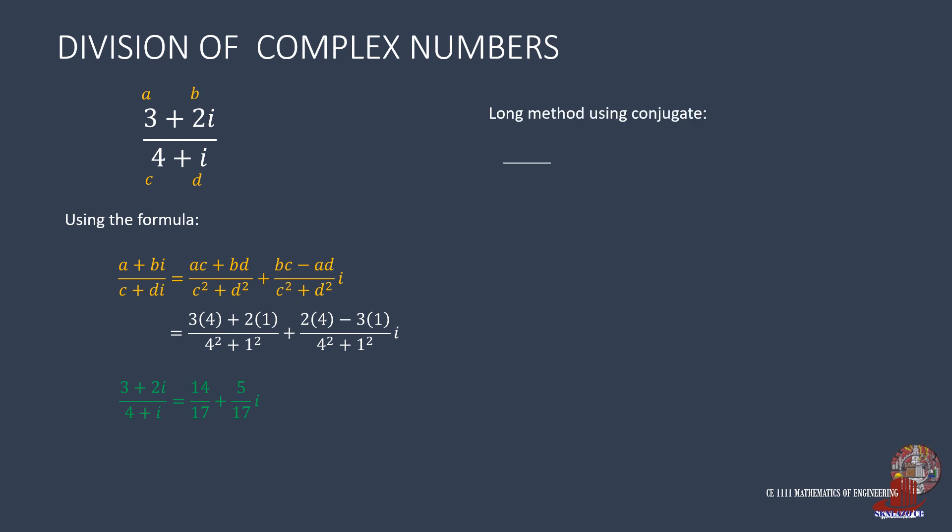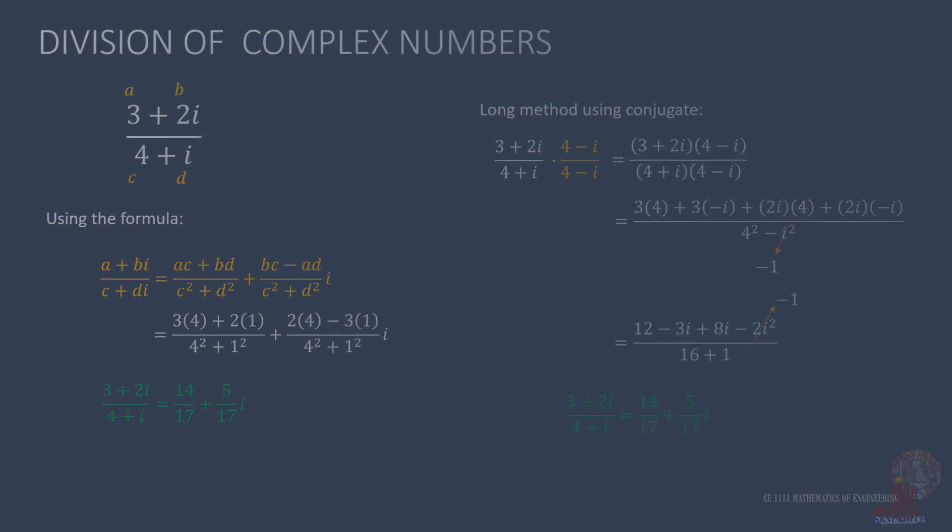With the long method using conjugate, the multiplier conjugate is 4 minus i, making the solution 3 times 4 plus 3 times negative i plus 2i times 4 plus 2i times negative i, all over 4 squared minus i squared, which is taken as negative 1. The long numerator can be reduced to 12 minus 3i plus 8i minus 2i squared, all over 16 plus 1. Separating the real number from the imaginary, the quotient is 14 over 17 plus 5i over 17. Similar with what was solved using the formula. A little longer but one doesn't need to memorize a long formula.